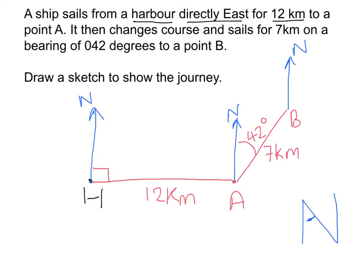The angle inside one end of the Z and the angle inside the other end must be equal to each other. Similarly, if you have an F shape on its side, the two angles inside the F must also be equal to each other. It's worth bearing those in mind. Extending the north lines can also be quite useful with bearing questions so that you can spot these F's and Z's.